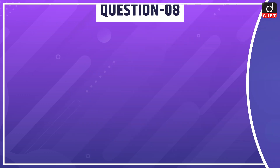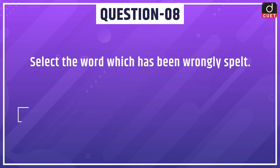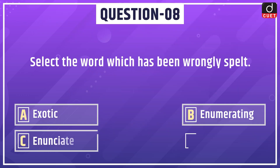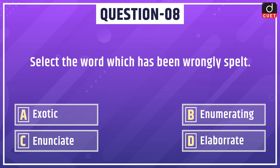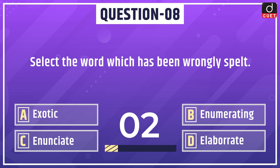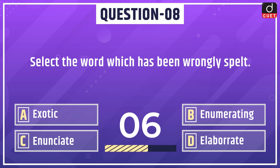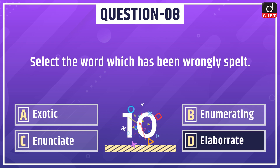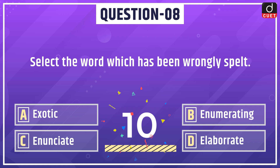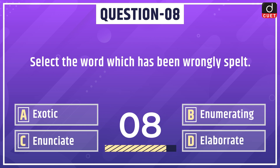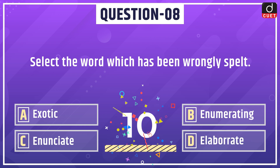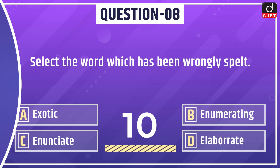Next question: select the word which has been wrongly spelt — exotic, enumerating, enunciate, or elaborate. The correct answer is option A, and the right spelling would be E-L-A-B-O-R-A-T-E.